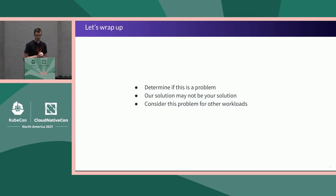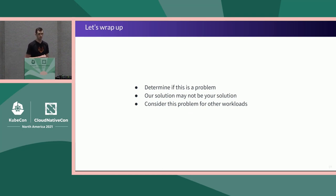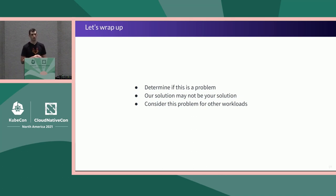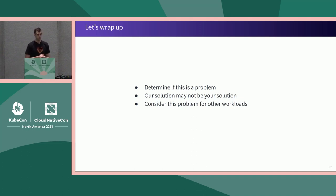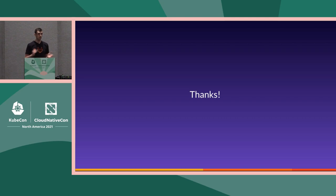To wrap up: first, determine whether this is a problem for you. It was a problem for us because we started with a regional cluster and didn't know that network egress between zones within a cluster would be an issue. The solution we chose may not be for everyone — we went with multiple clusters because at the time we didn't have a lot inside of Kubernetes, so it was easier to deploy more clusters than explore other solutions. Also consider whether this is a problem with other workloads outside of Kubernetes, as cross-zone egress can exist elsewhere in your stack as well.